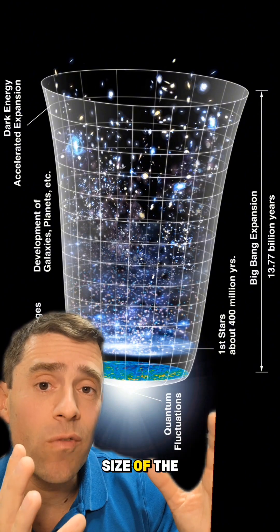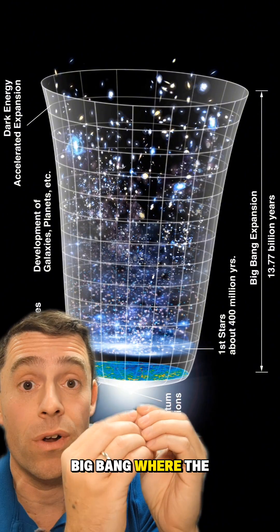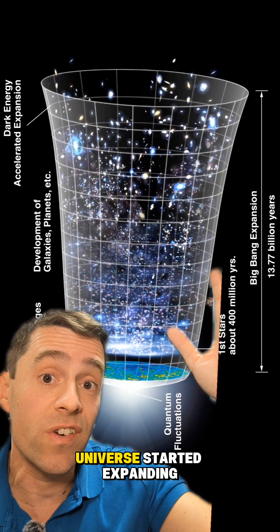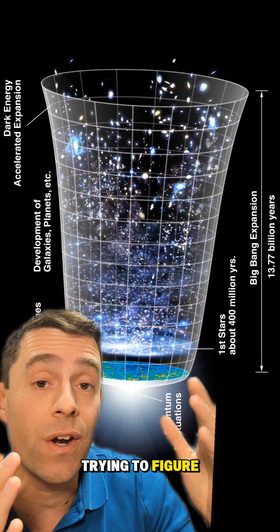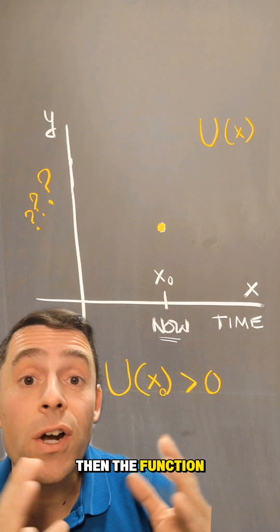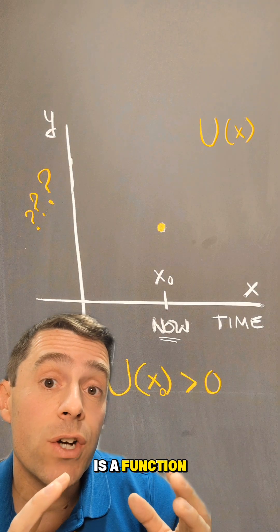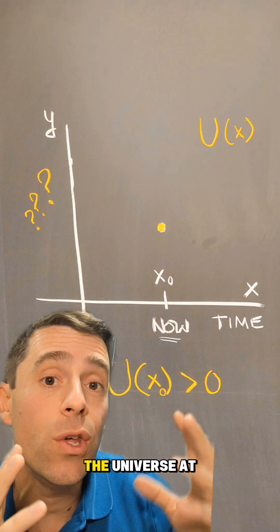What they're trying to figure out is what is the size of the universe over time? There was supposed to be a Big Bang where the universe was very small. And then the universe started expanding in size. The function we're interested in is a function u(x) that gives me the size of the universe at time x.